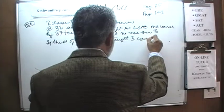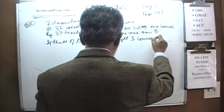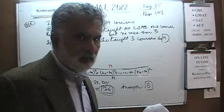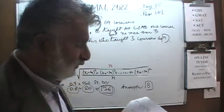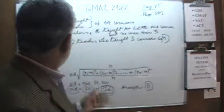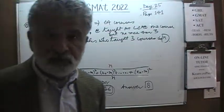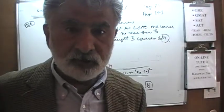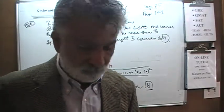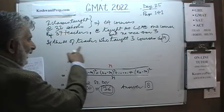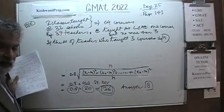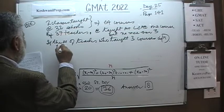If n represents the number of teachers who taught exactly three courses — any teacher you pick from these 37 must have taught one, two, or three courses, but no more than three — then the question is: what are the least and greatest possible values of n?